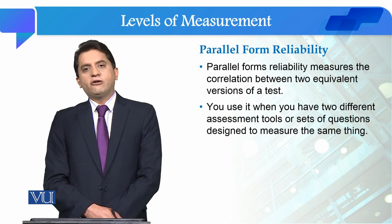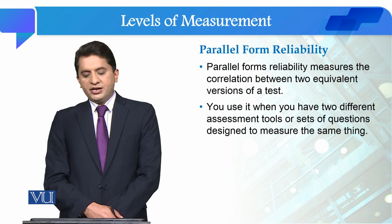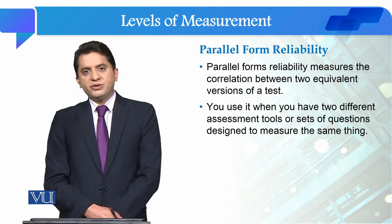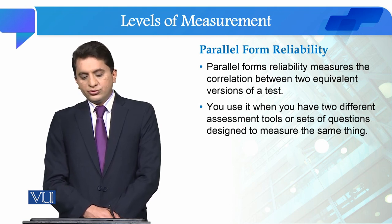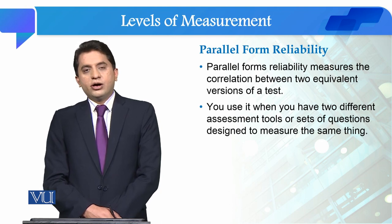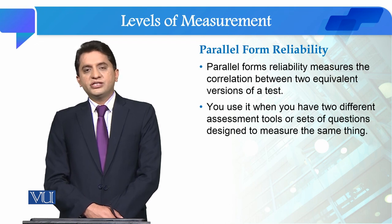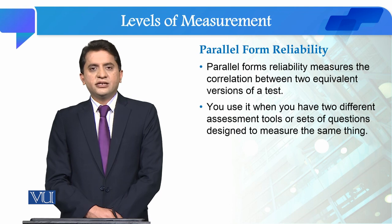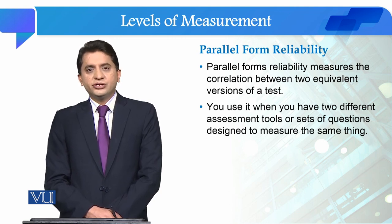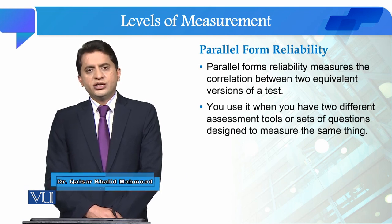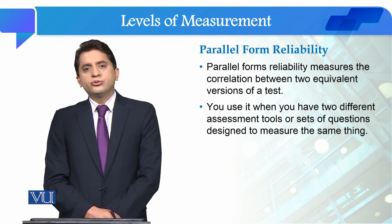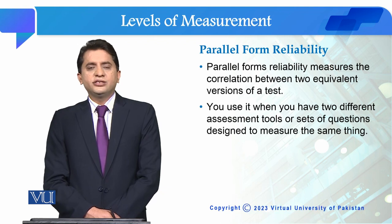The second type of stability reliability is parallel form of reliability. In parallel form of reliability, we measure the correlation between two equivalent versions of a test — हमने एक ही test के लिए दो versions develop की हैं with different items. We use it when you have two different assessment tools or sets of questions designed to measure the same thing. For instance, हम assume करते हैं that we want to assess the academic performance of students and we have developed two different tools. After getting data from respondents, we check the correlation between these two tools — जितनी ज़्यादा correlation high होगी उतना ही parallel form of reliability high है, और जितनी correlation low होगी उतनी parallel form of reliability low है।